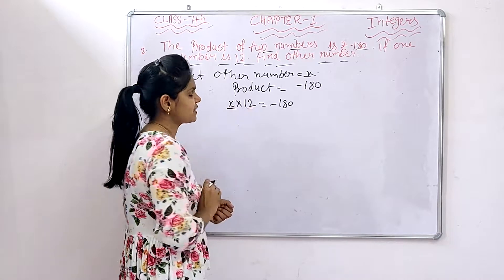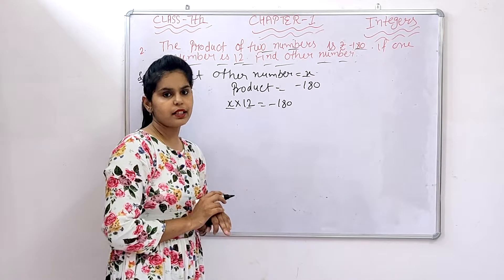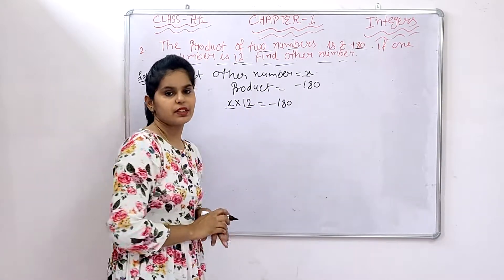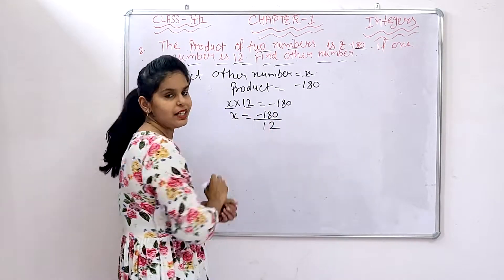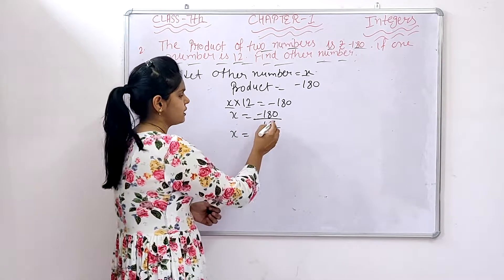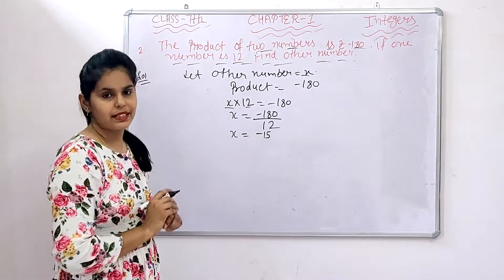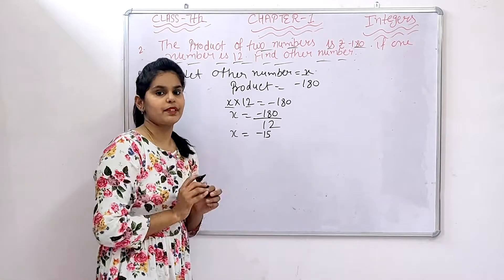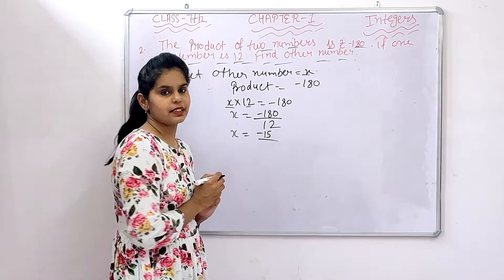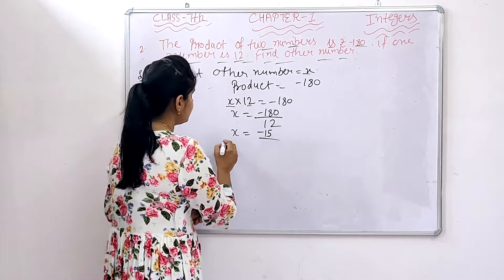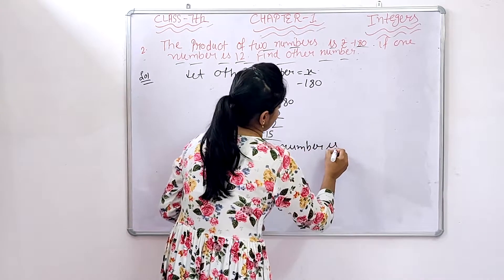We have to find x, so we divide: x equals minus 180 divided by 12, which gives 15. Now, which sign? It is minus — because when we divide two numbers with one sign being negative, the answer is negative. So x equals minus 15. The other number is minus 15.